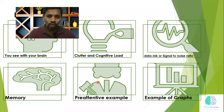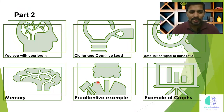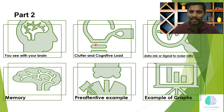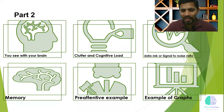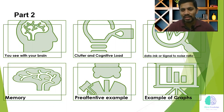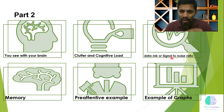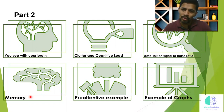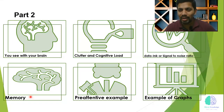Part 2 is all about how you see with your brain — a very nice concept. We're going to talk about clutter, meaning messy or not well organized, and cognitive load: when you have too much information in a chart, how difficult it is for the reader to extract meaning. We will also talk about data ink and signal-to-noise ratio, and memory — from a psychological point of view — including short-term memory, long-term memory, and iconic memory.